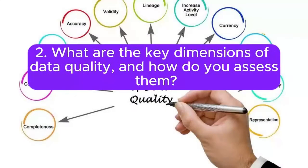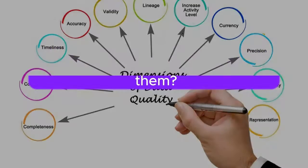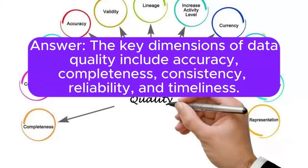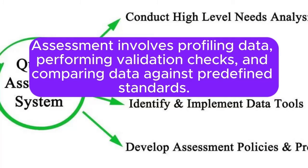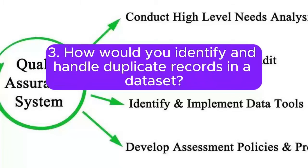2. What are the key dimensions of data quality, and how do you assess them? Answer: The key dimensions of data quality include accuracy, completeness, consistency, reliability, and timeliness. Assessment involves profiling data, performing validation checks, and comparing data against predefined standards.